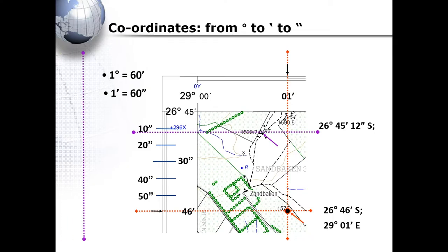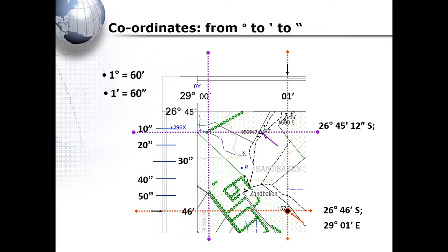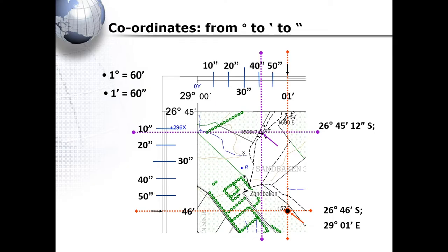We will do the exact same to determine our longitudinal coordinates. Then we can read our coordinates of 26 degrees, 45 minutes, 12 seconds south and 29 degrees, 0 minutes and 41 seconds east.